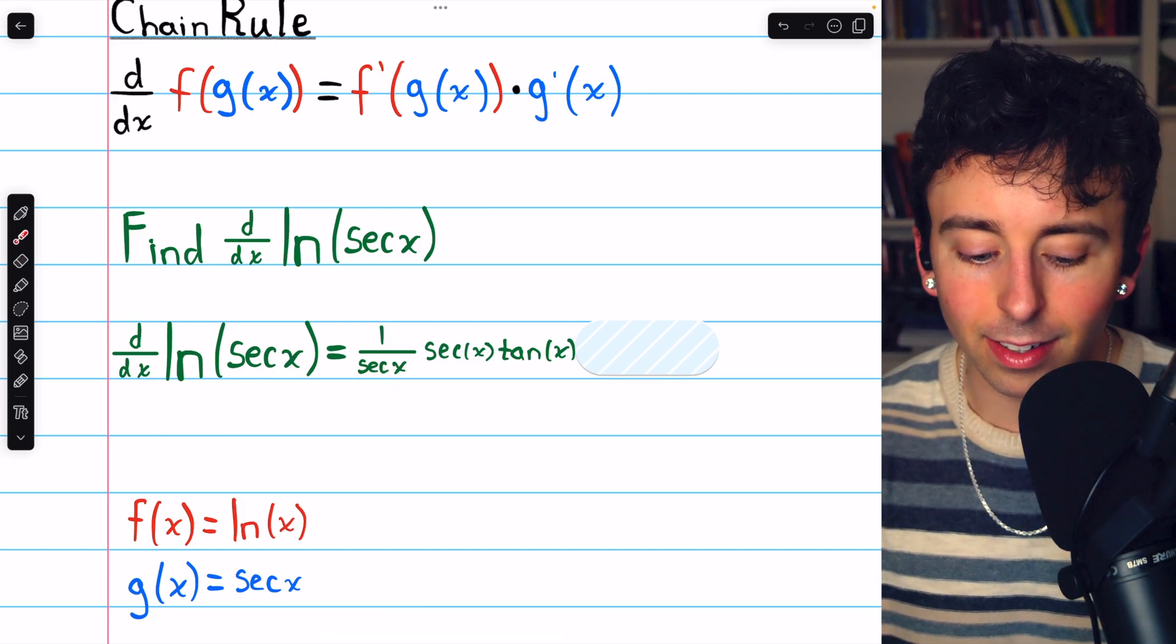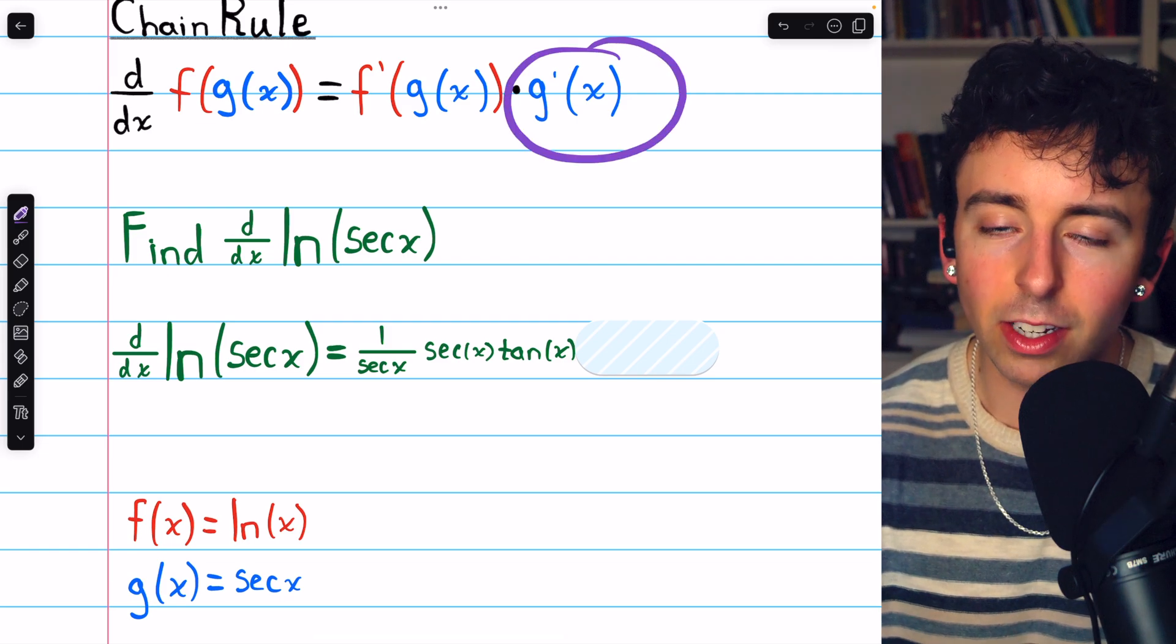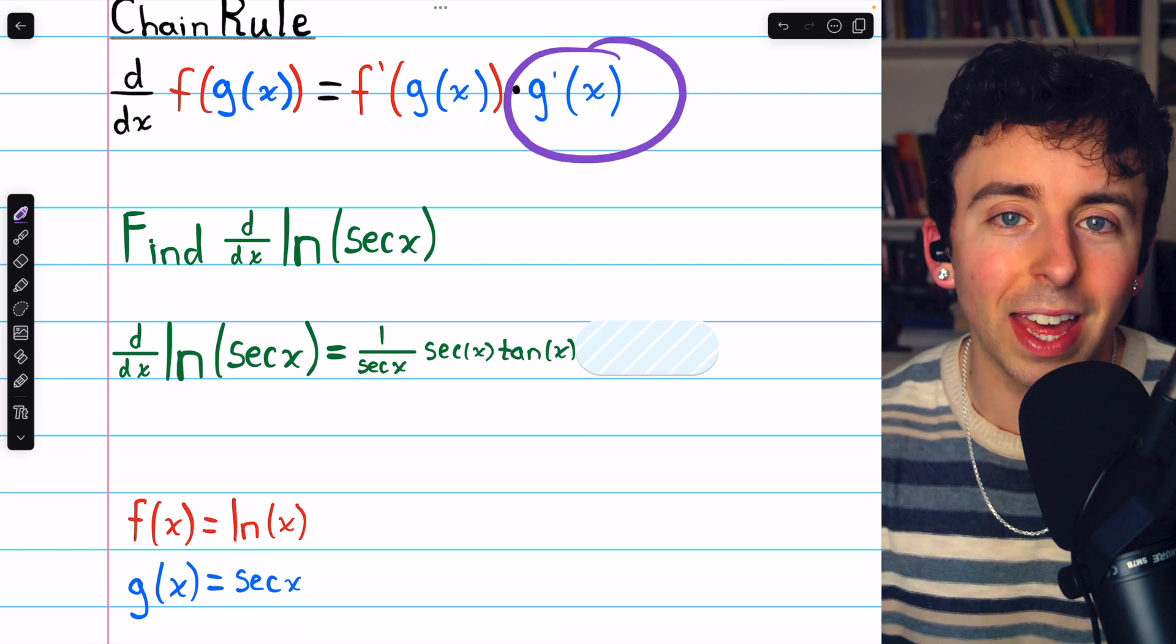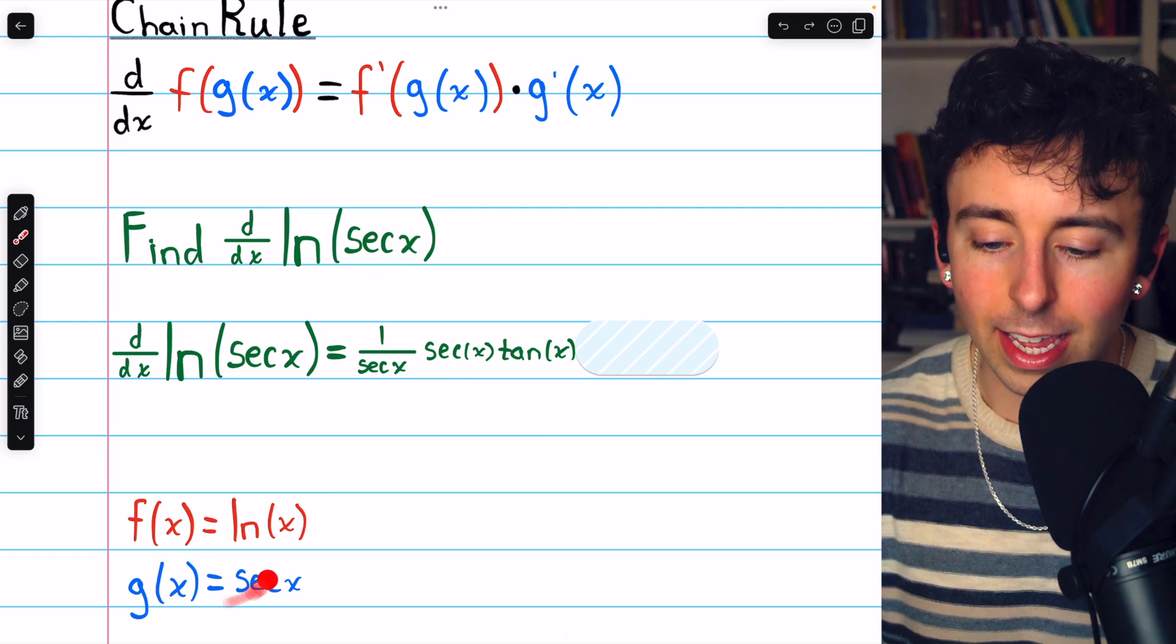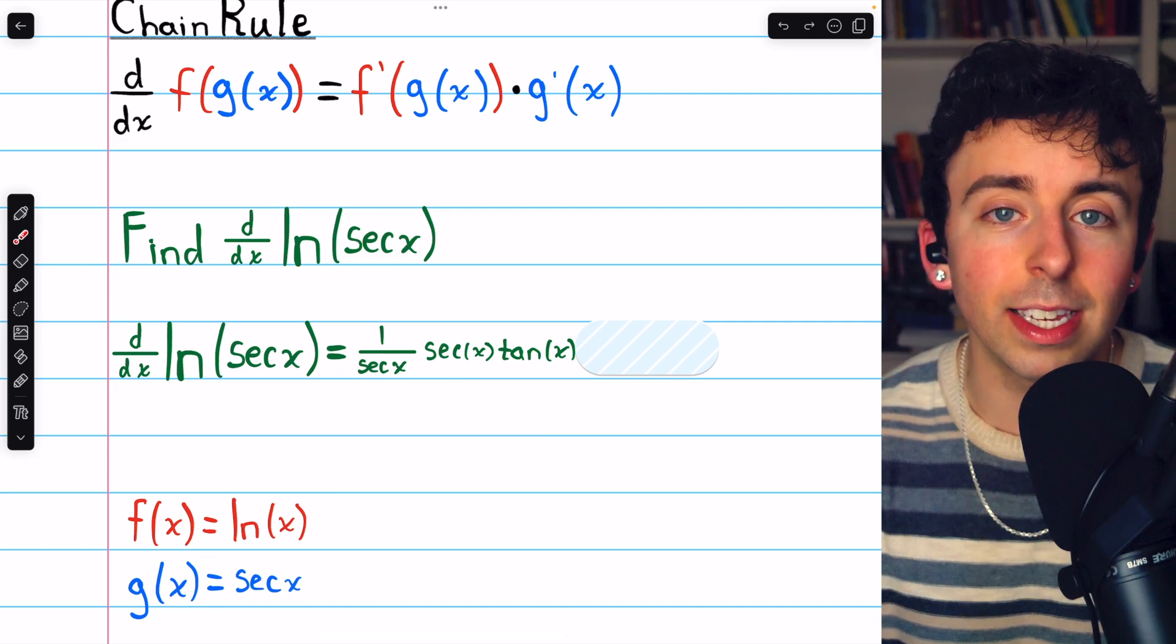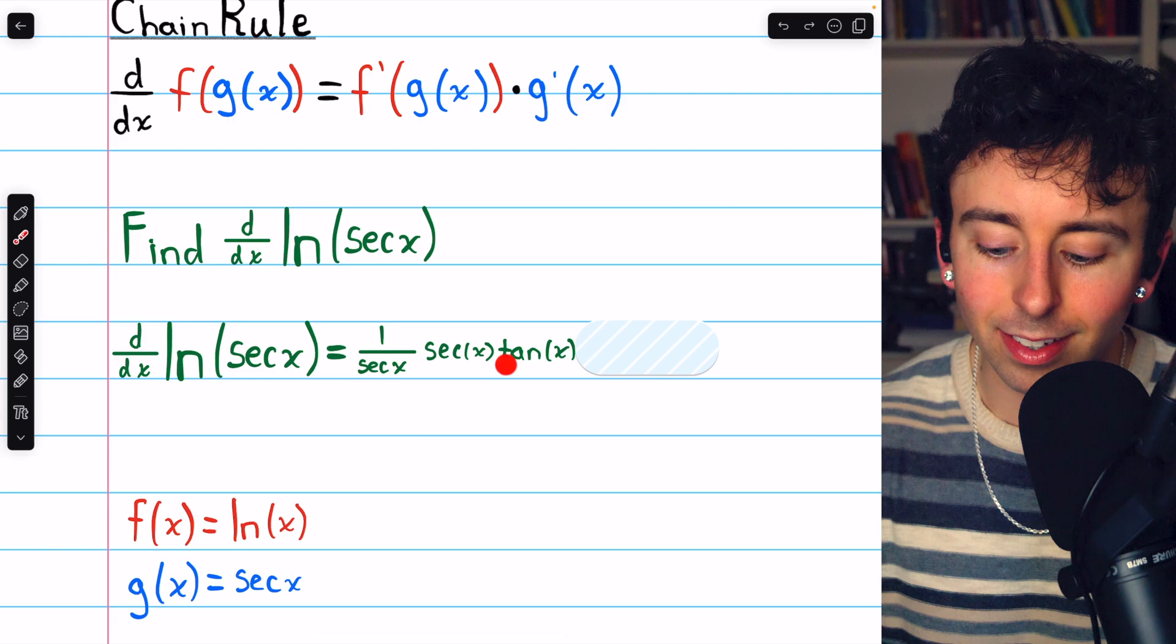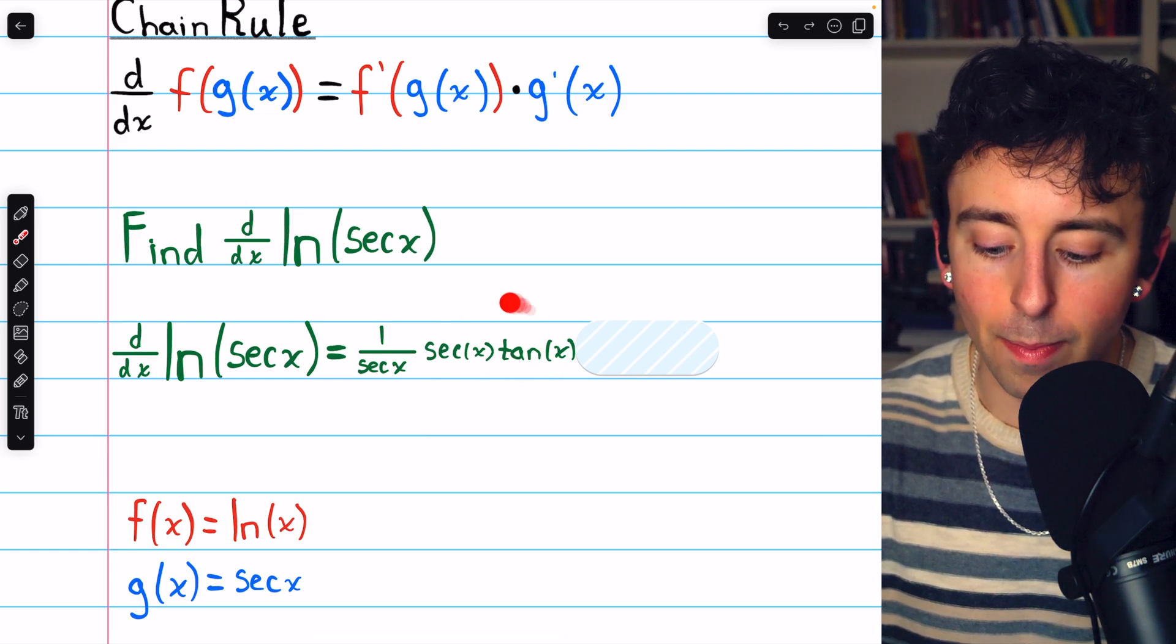So 1 over the input, 1 over secant x. But then we need to multiply by g prime, the derivative of that inside function. The inside function, g, is secant x. And the derivative of secant x is secant x tangent x. So we multiply by that.